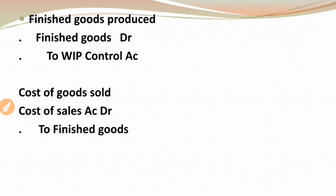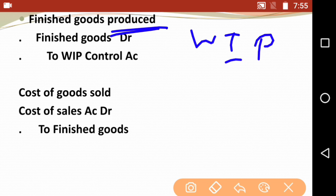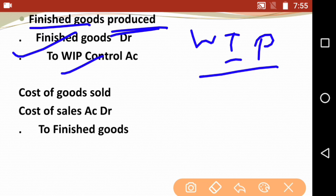Next is finished goods produced — this is also a very important entry. Remember: 'produce' means production, and wherever production comes we write WIP. So when finished goods are produced, they come out of WIP. The entry is: finished goods control account debit to WIP control account. We add 'control account' because we are following the non-integrated system where control accounts play a very important role.